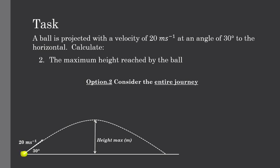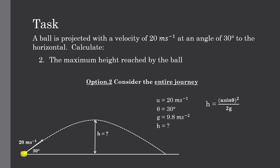Alternatively, considering the entire journey: with an initial speed of 20 at an angle of 30 and g = 9.8, we can use the equation h = (u sinθ)² / 2g. Substituting our values gives a height of 5.1m. Again, this is valid as long as we have a symmetrically designed oblique projectile motion.